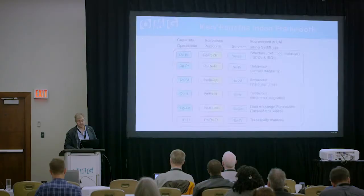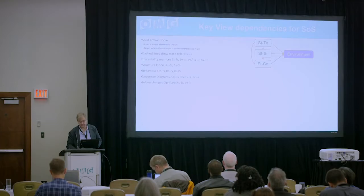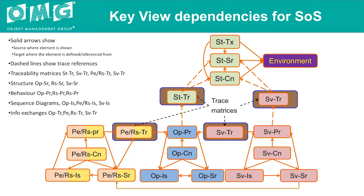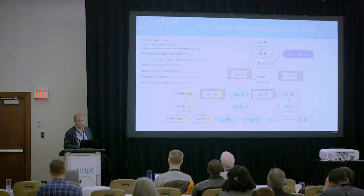Looking at the key view dependencies — a subset of views following down from capabilities: we have taxonomy at the top, leading down to structure and connectivity. That traces down to the operational domain through processes, and through operational connectivity — a summary of structure, interaction scenarios, and state machines — ties into services through traceability and also into resources. Then the tie-in between services and the resources that implement them is key. The traceability graph column on the right-hand side ties all these views together.